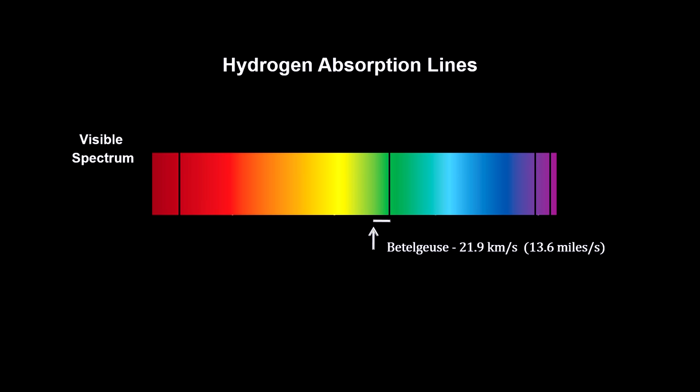The key to measuring the Doppler effect is to measure the change in position of the spectral lines. The further the shift, the faster the radial velocity.